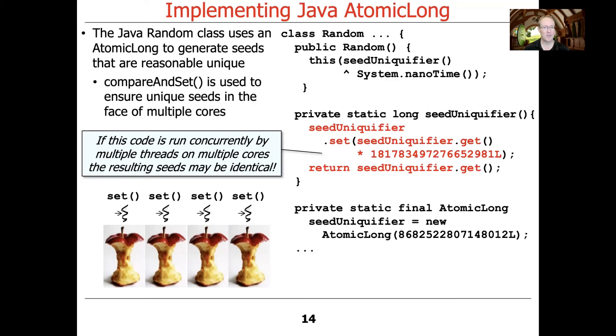So this call here, as I showed you in red, that is actually not atomic because we're calling get and we're calling set. And those are two operations.